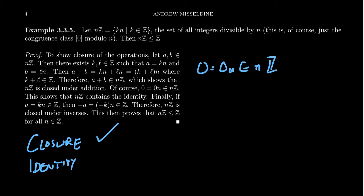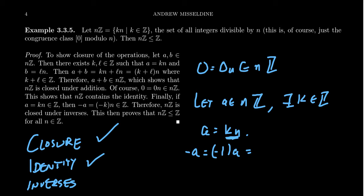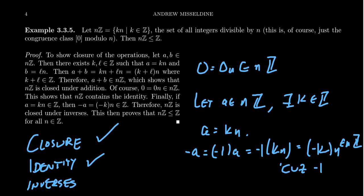This answers our question in the affirmative: we do have the identity. The last thing to do is to check inverses. Does this subset contain inverses? We start with an element: let A be an element of NZ, which means there exists some integer K such that A equals KN. The inverse of A in the integers is negative A, which is negative 1 times A. But A equals K times N, so by properties of arithmetic on integers, we can write this as negative K times N. This belongs to NZ because negative K is itself an integer.